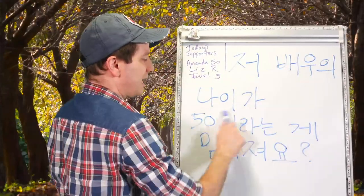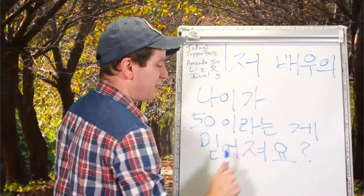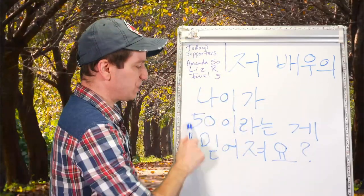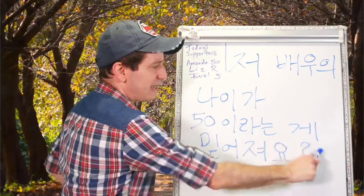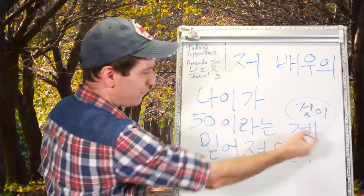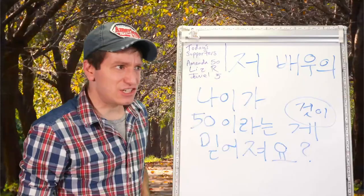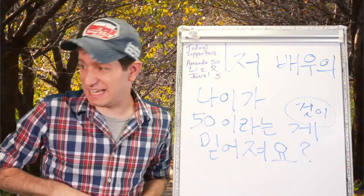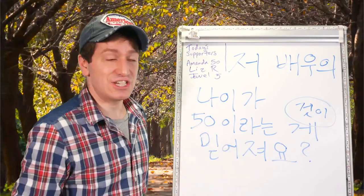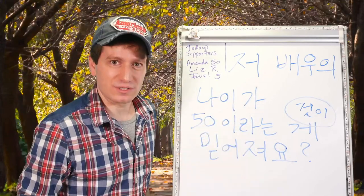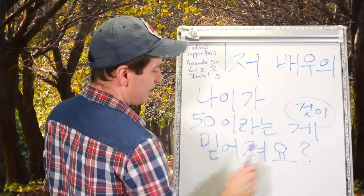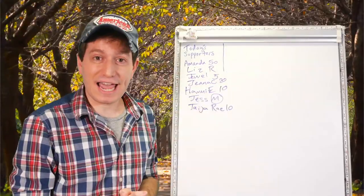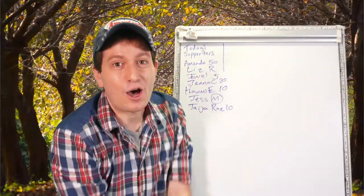저 배우의 나이가 오십이라는 게 믿어줘요? 배우 is actor or actress, 나이 is age, 오십 is fifty. 이라는 게 — 게 is 거시. So: is the fact that that actor's age is 50 believable? Can you believe that actor is 50 years old? 저 배우의 나이가 오십이라는 게 믿어줘요? That is the lesson for today. Thanks for coming, and 그럼 다음에 또 봐!